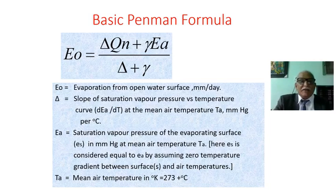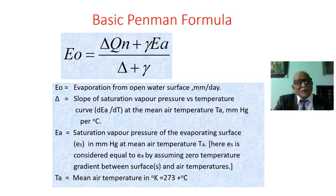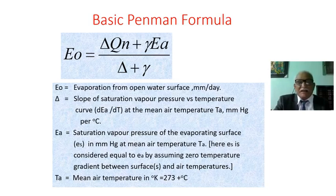The key variables: Ew is the evaporation from an open water surface in millimetres per day. Delta is the slope of the saturation vapor pressure versus temperature curve. Ea is the saturation vapor pressure of the overlying surface. Ta is the mean air temperature. These have been discussed several times.